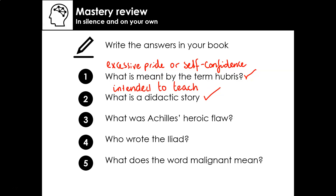What was Achilles' heroic flaw? If you can remember the character of Achilles, our tragic hero — his flaw was his hubris. In the story, his hubris led to his downfall and his death. He thought that he was immortal; however, he had a weakness that led him to make a mistake in battle and then to be killed.